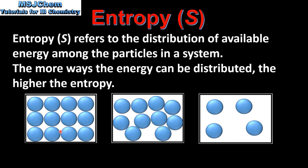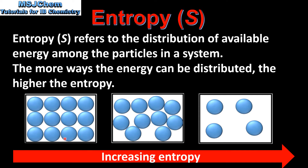Here we have simple particle models of a solid, a liquid, and a gas. As the state changes from solid to liquid to gas, there are more ways in which the energy can be distributed, therefore the entropy increases. So solids have the lowest entropy and gases have the highest entropy.